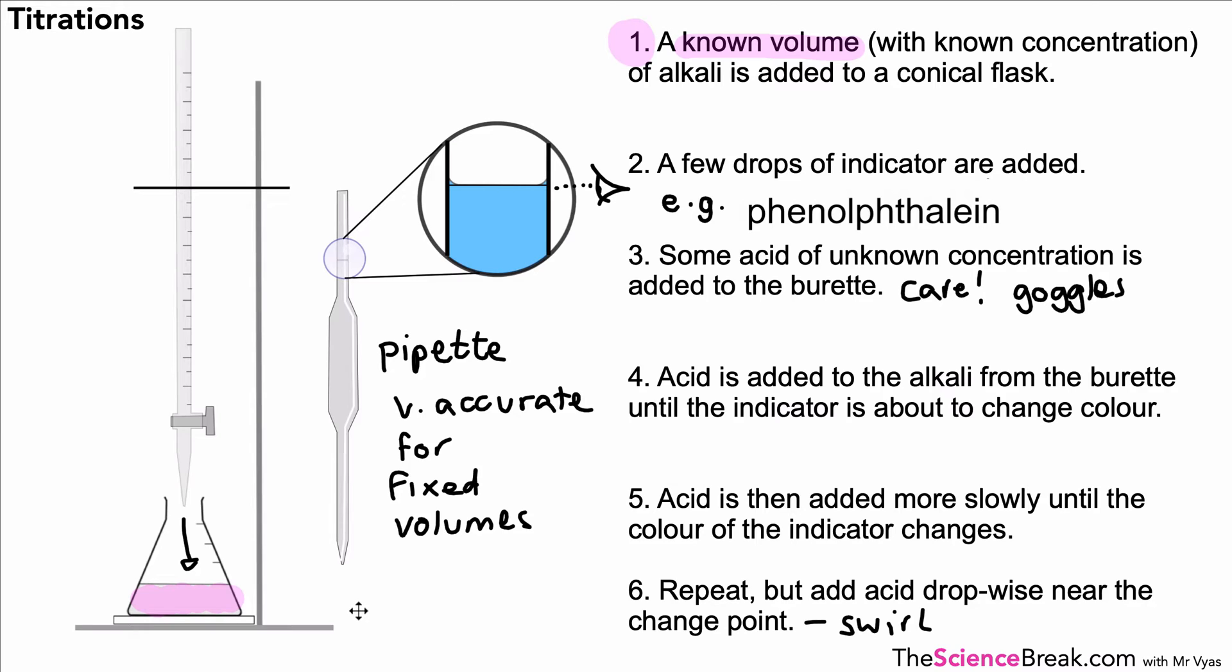So we get a very accurate value of the volume of acid that we added. We would record that volume and we could then repeat this up to five times. We would repeat it between three and five times, and when we've done that we would get a mean value and record that.